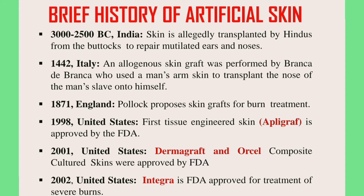Looking at the brief history of artificial skin, several countries have contributed. India transplanted skin from the buttocks to repair multilateral and nose areas. Italy is famous for the use of allogeneic skin grafts. England proposed skin grafts for burn treatment. The United States is most advanced — the first tissue-engineered skin, known as Apligraf, was approved by the FDA, along with other FDA-approved products: Dermagraft, OrCel, and Integra for treatment of severe burns. India notably showed skin transplantation as far back as 3000 BC.